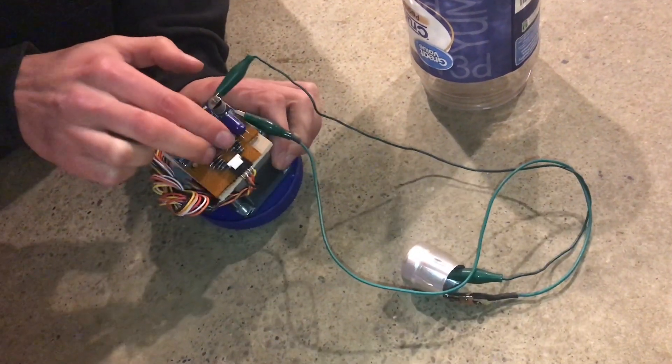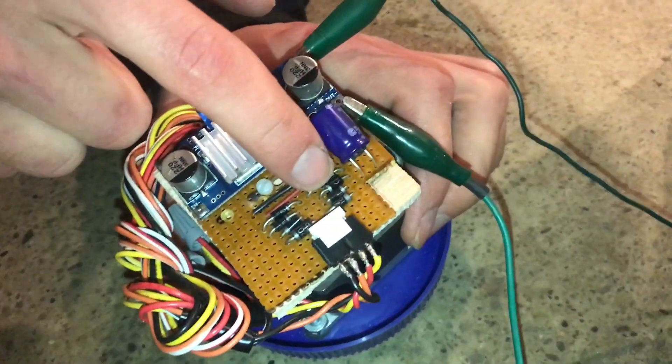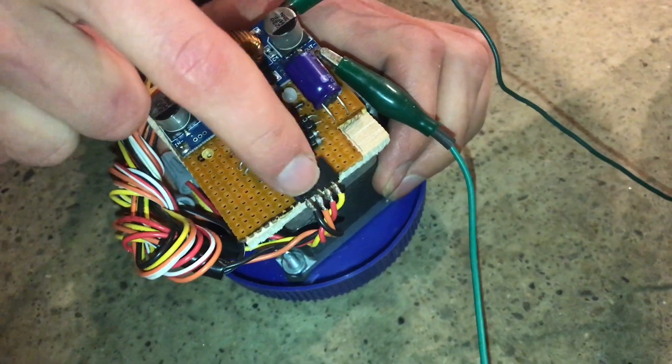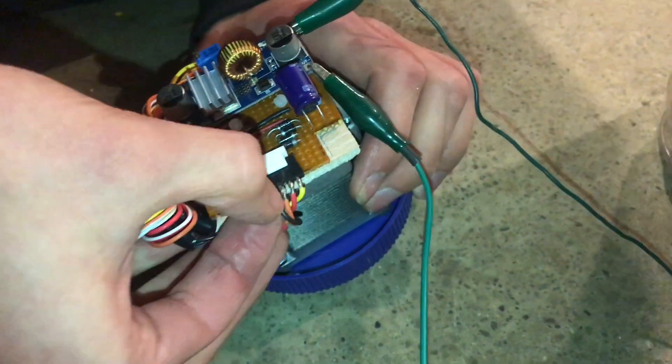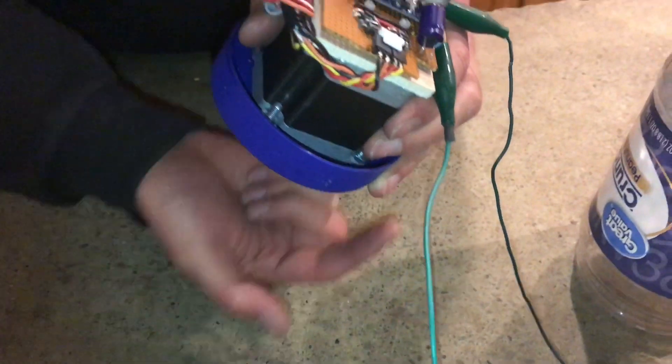Anyway, the first part of the circuit is two bridge rectifiers. One for each phase of the motor or each coil of the motor because they'll produce a sine wave as the motor rotates.